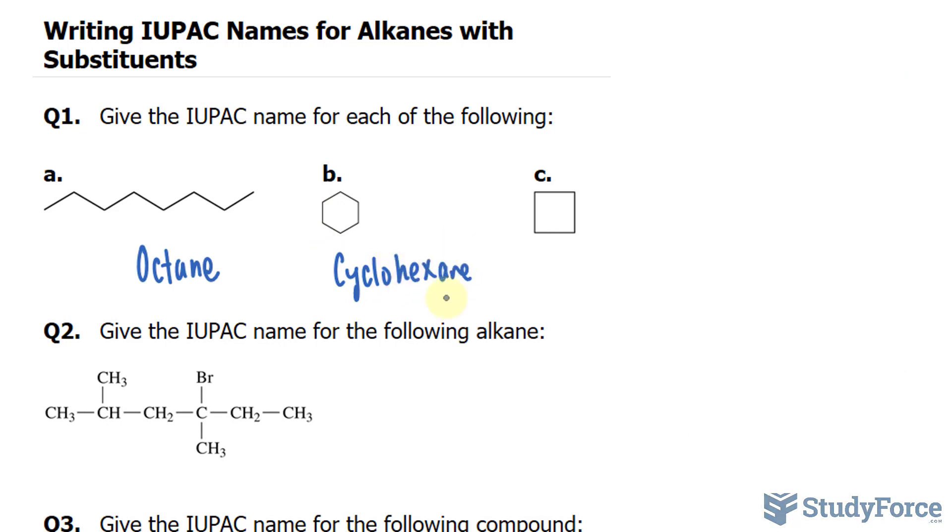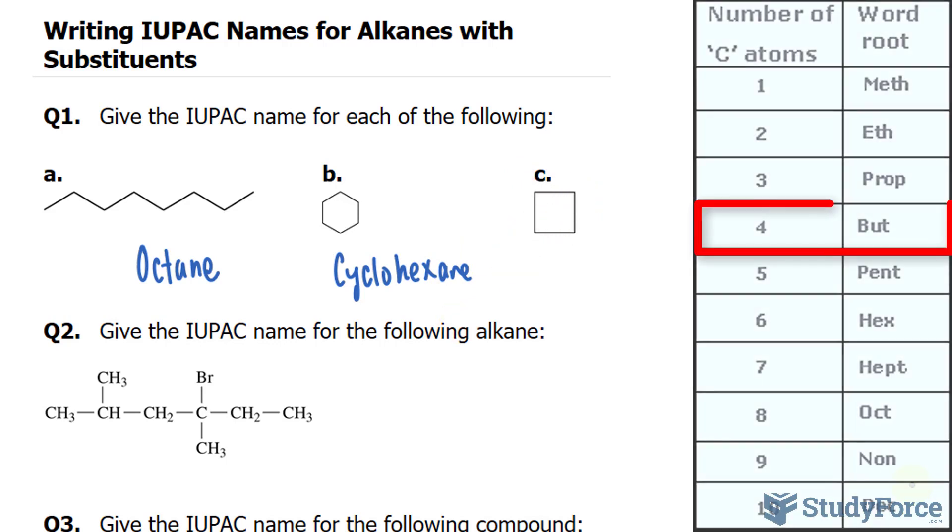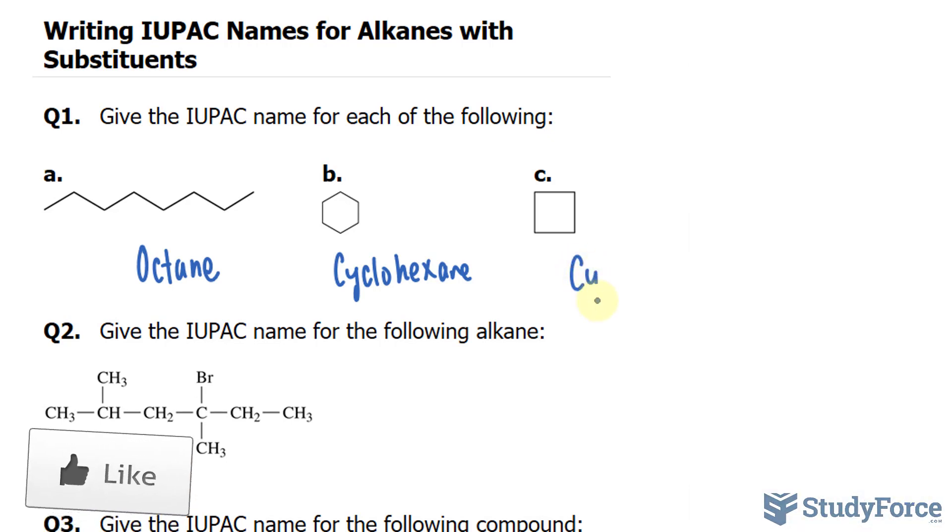The next one is also a cyclical structure. We have 1, 2, 3, 4. For a 4-carbon structure, we use the prefix B-U-T. So normally it's butane, but this one would be cyclobutane.